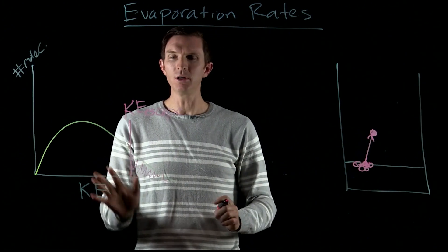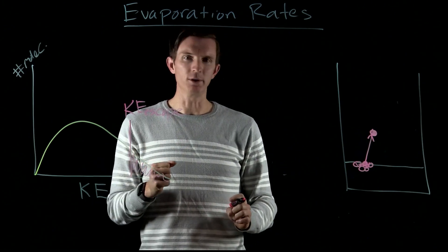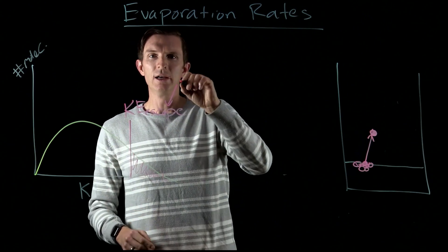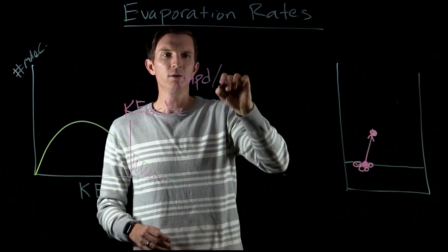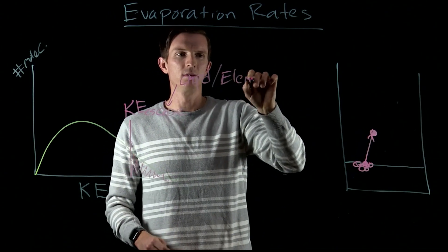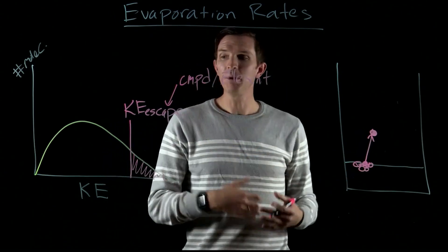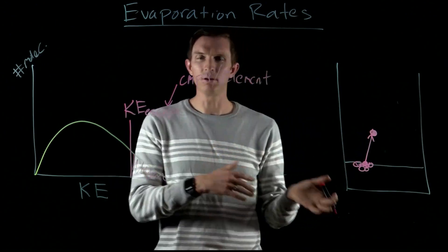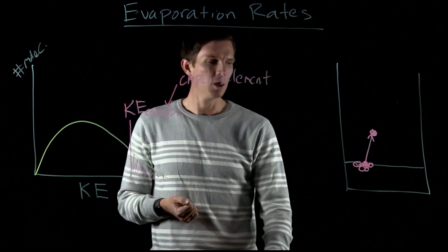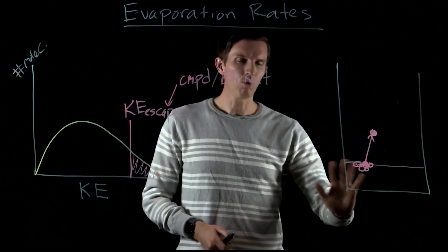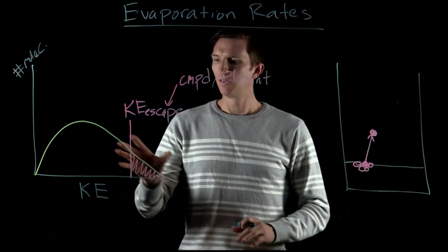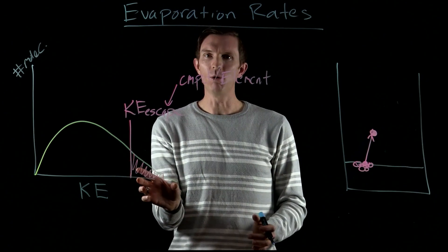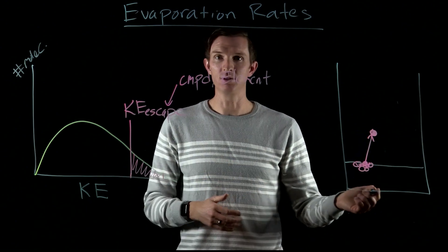At a specific temperature, the kinetic energy required to escape is specific to each individual compound or element. Water has a specific escape kinetic energy; ethanol has its own specific escape kinetic energy. If we're dealing with water molecules, the only way to change how fast it evaporates is to give more molecules enough kinetic energy to escape, and that can happen by changing the temperature.